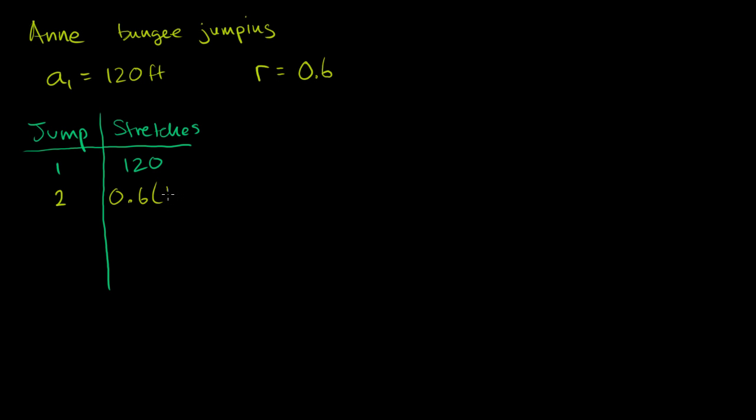So on the second jump, we're going to stretch 60% of that, or 0.6 times 120, which is equal to what? That's equal to 72. Then on the third jump, we're going to stretch 0.6 of 72, or 0.6 times this. So it would be 0.6 times 0.6 times 120.